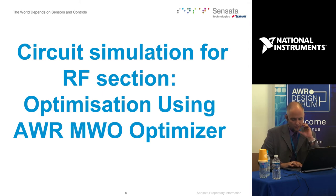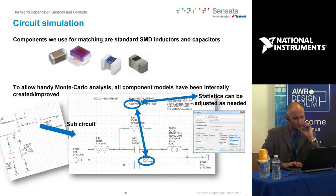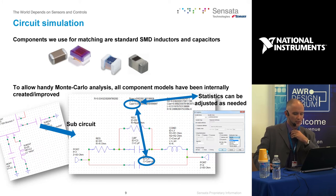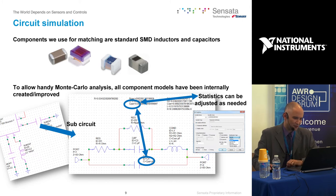Once we have the sub-circuit for the EM structure, we start the simulation on the circuit side. All the components we use for the matching are standard SMD inductors or capacitors. Every component connected to the EM structure is described by a sub-circuit. We have designed all our own models, first to trust them, and also to have the ability to play with statistical parameters when running a Monte Carlo analysis once the design is close to final.